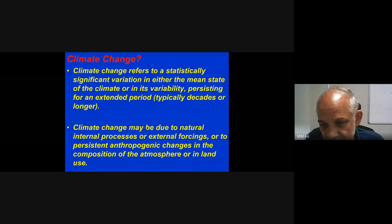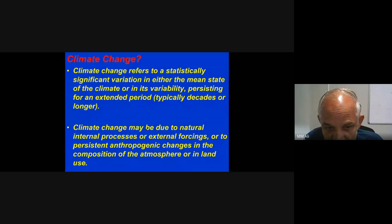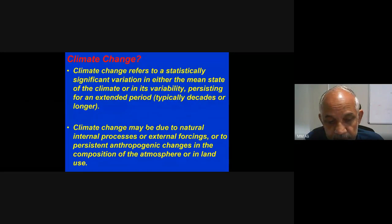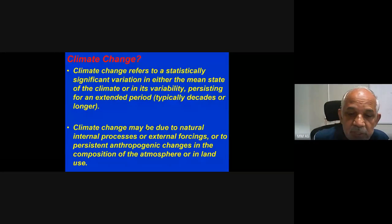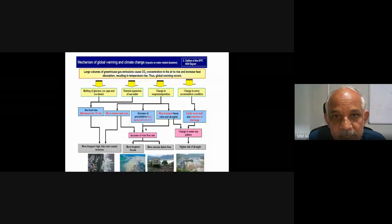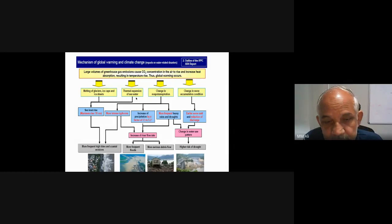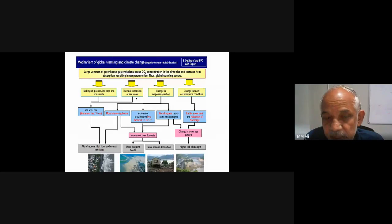Climate change may be due to natural internal processes — though their contribution is very less — or external forcing, or persistent anthropogenic changes in the composition of the atmosphere or in land use and land cover. Anthropogenic changes are mostly causing climate to change very drastically and with high acceleration.